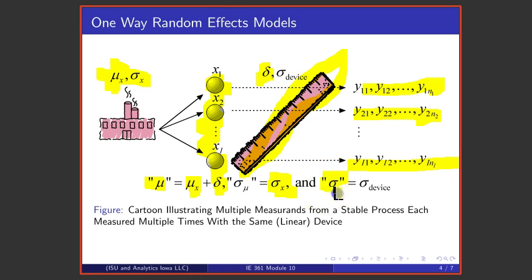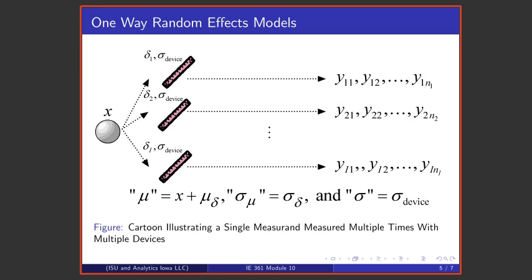And the σ is the variability that's associated with measurement. So one application of the one-way random effects model is to this scenario and here are the correspondences between the general parameters of the model and the particular situation under discussion here.